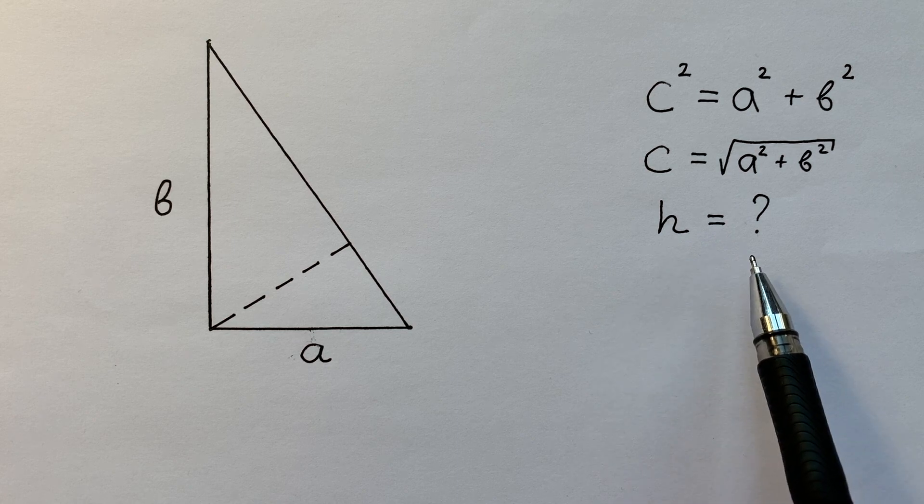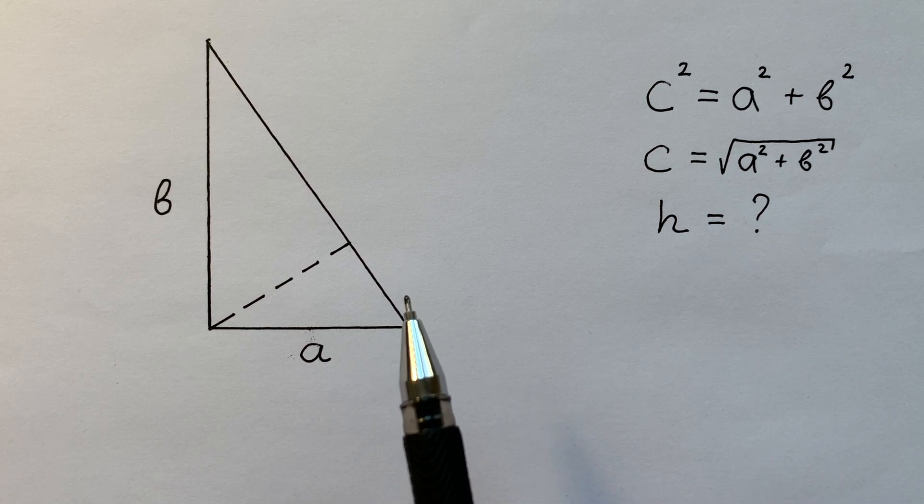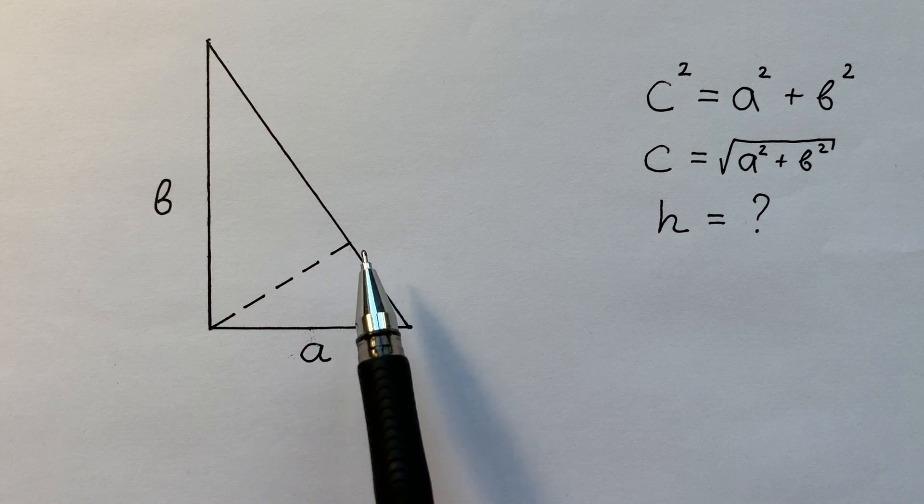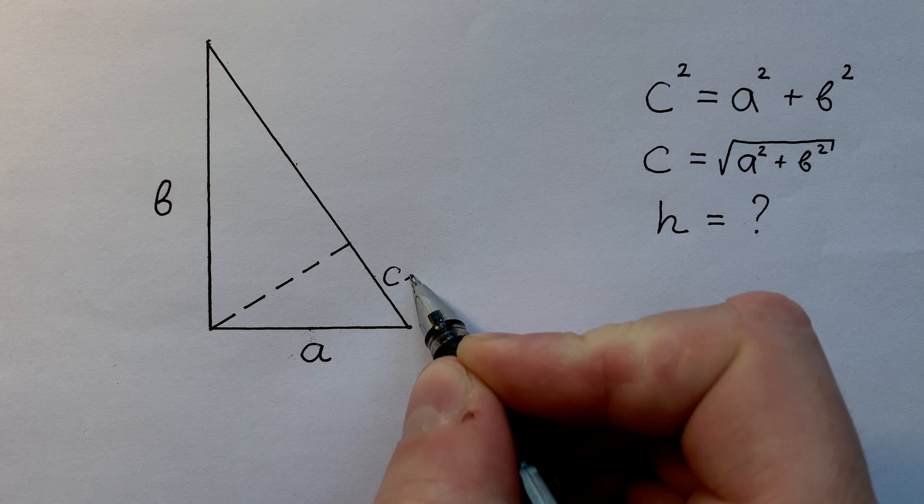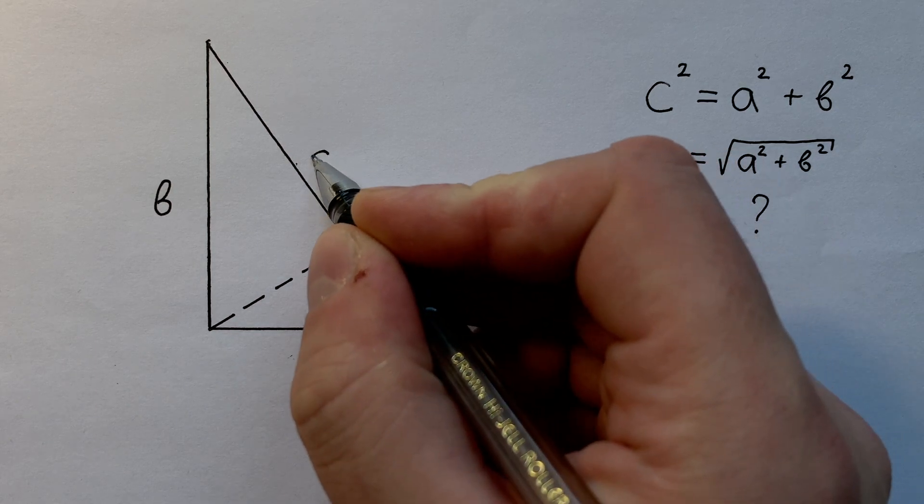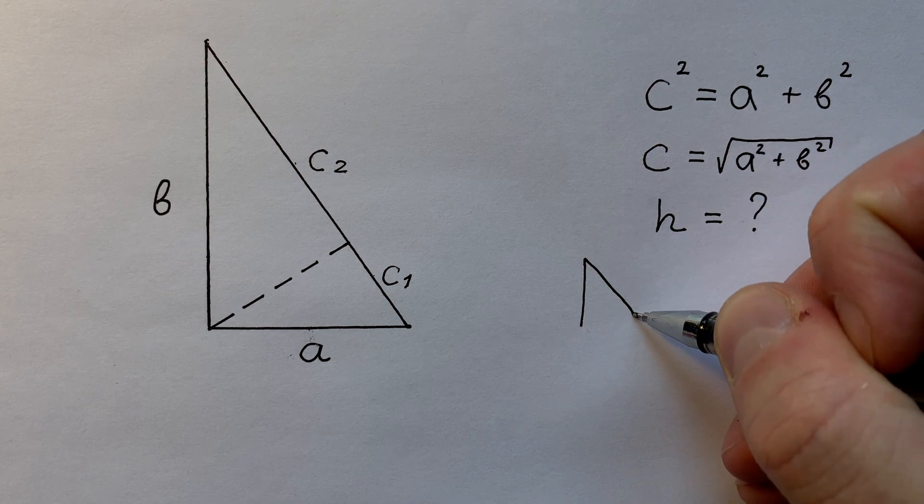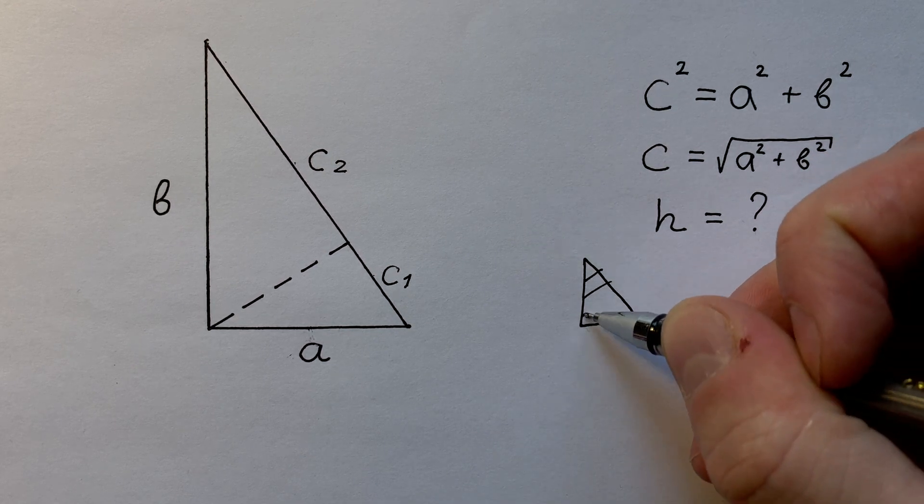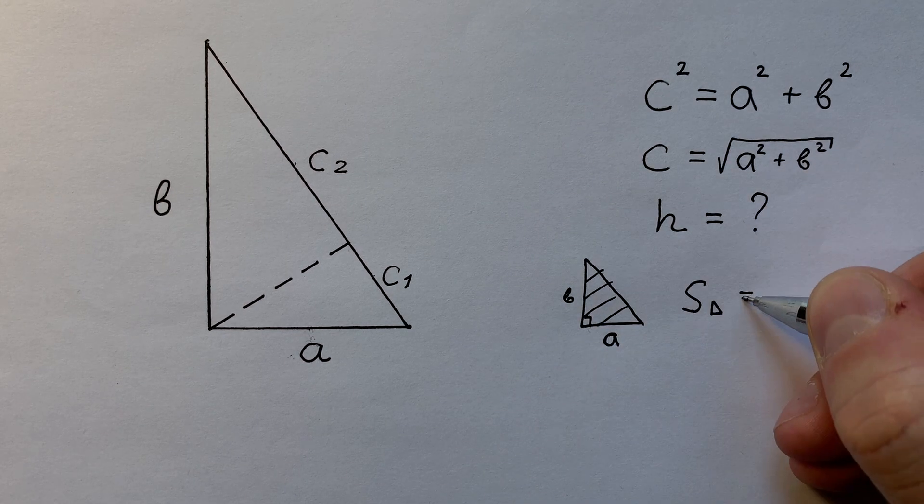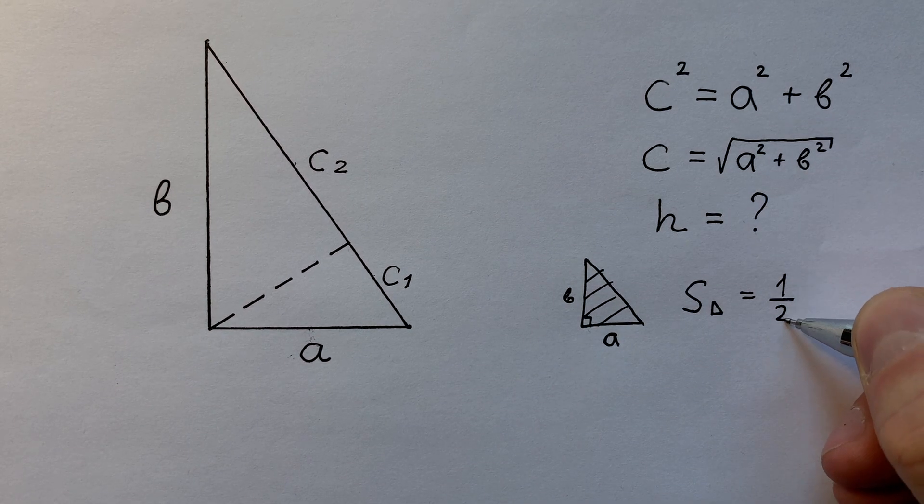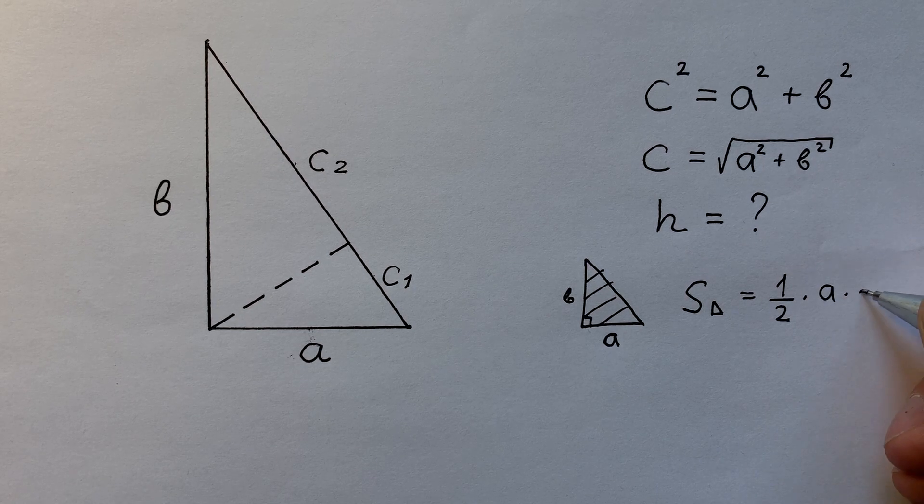But how to find H? Very simple. At first, let's denote two segments of the hypotenuse as C1 and C2. And remember that the area of a right triangle with catheti A and B equals half the product of the catheti.